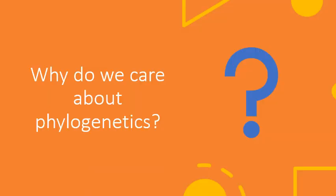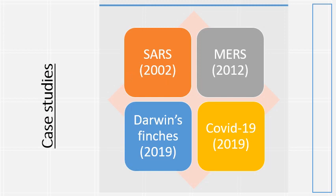Why do we care about phylogenetics? To understand this, we will briefly discuss some case studies. We'll talk about SARS disease, MERS with reference to our previous lecture on evolution, Darwin's finches and how this tool helped identify the lineage of a new bird, and also COVID-19, which is the pandemic being faced by people around the globe — all discussed with respect to phylogenetic trees.